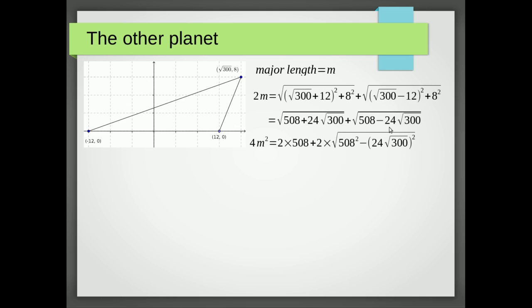However, we're also going to get twice this square root multiplied by this square root, which is actually just a difference of two squares expanded, so we get this. We can then just type this in our calculators and we get 4m² = 1600, so m² = 400, so m = 20. So the major axis is 20.